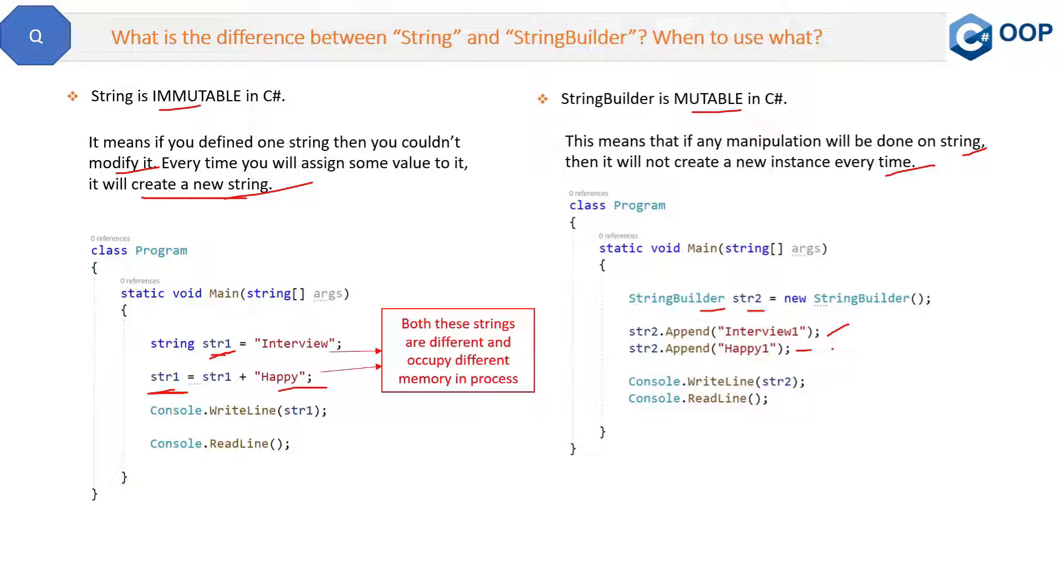And only the values will be updated. Like initially it will be interview one, then interview one happy one. So whatever operation you want to do with this str2, the reference will be same but value will be updated. Now the thing is both these strings will remain in memory, as I said. So this is the difference between string and StringBuilder.